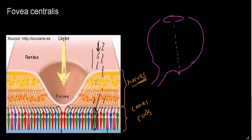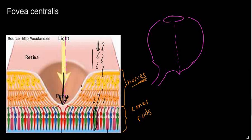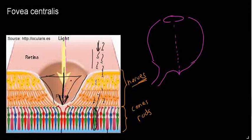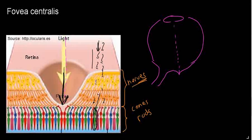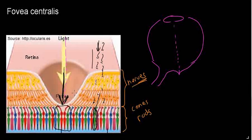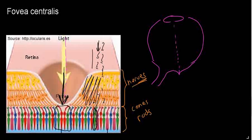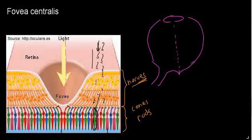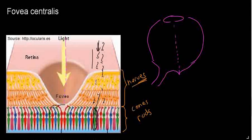Light is way more resolvable in the fovea because there aren't any nerves there absorbing the incoming light. So the cones in the fovea can resolve photons even when light conditions are not maximal, precisely because they lack that nerve tissue layer.